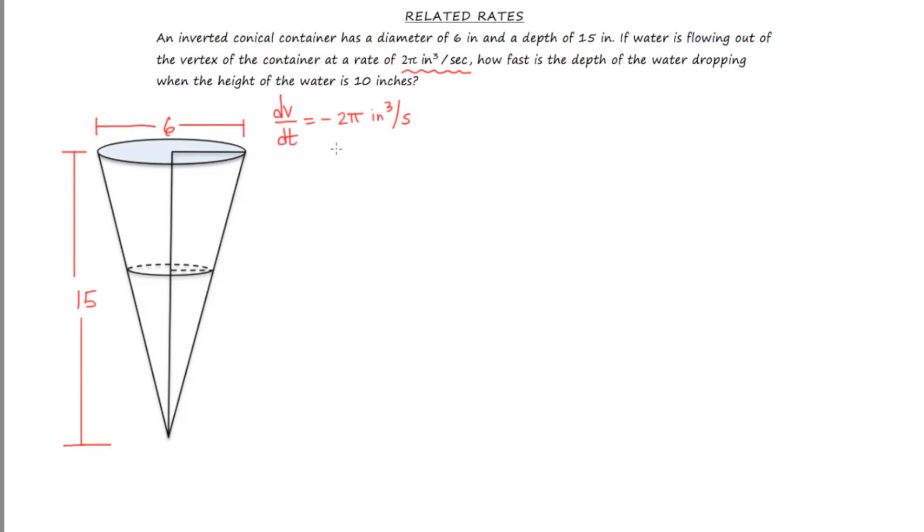Now this diagram down here, the smaller triangle inside the smaller cone, represents the water remaining in the tank. And as time goes on the water is less and less. So what I'm going to do is I'm going to call this upper circle, this little portion here, I'm going to call it r, and I'm going to call this height here h. So the question says how fast is the depth of the water dropping? In other words, they're asking us to find dh/dt when the height of the water is 10 inches.